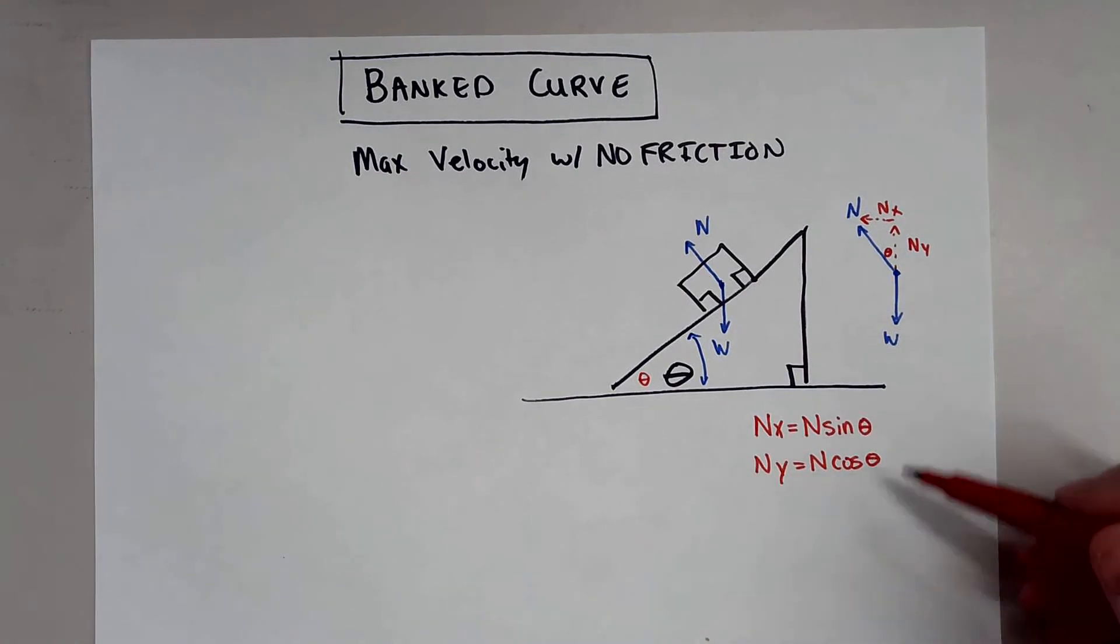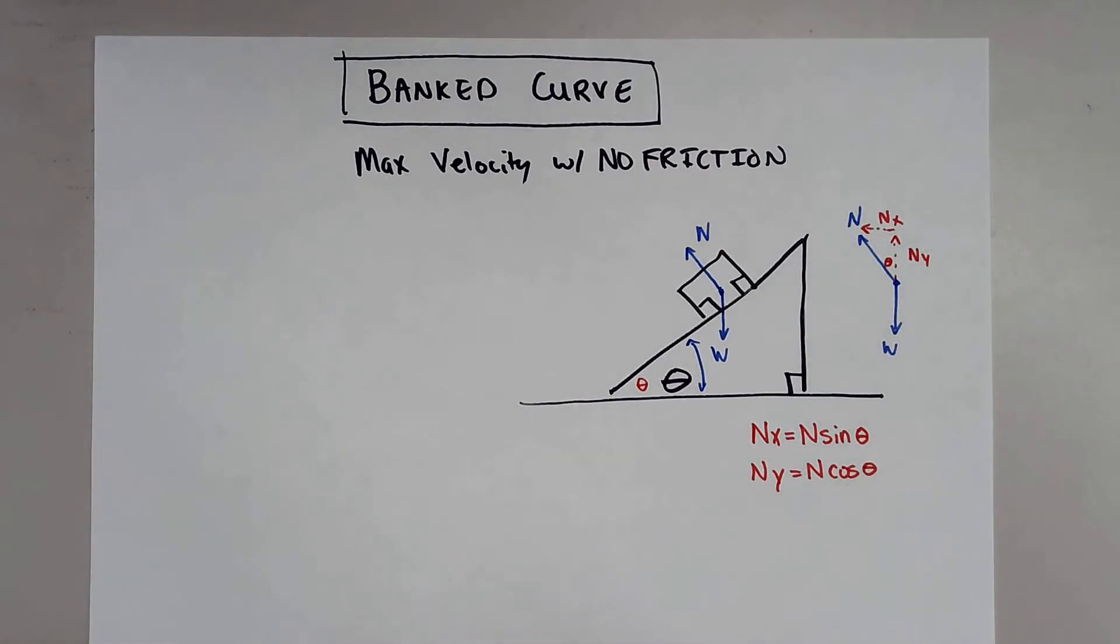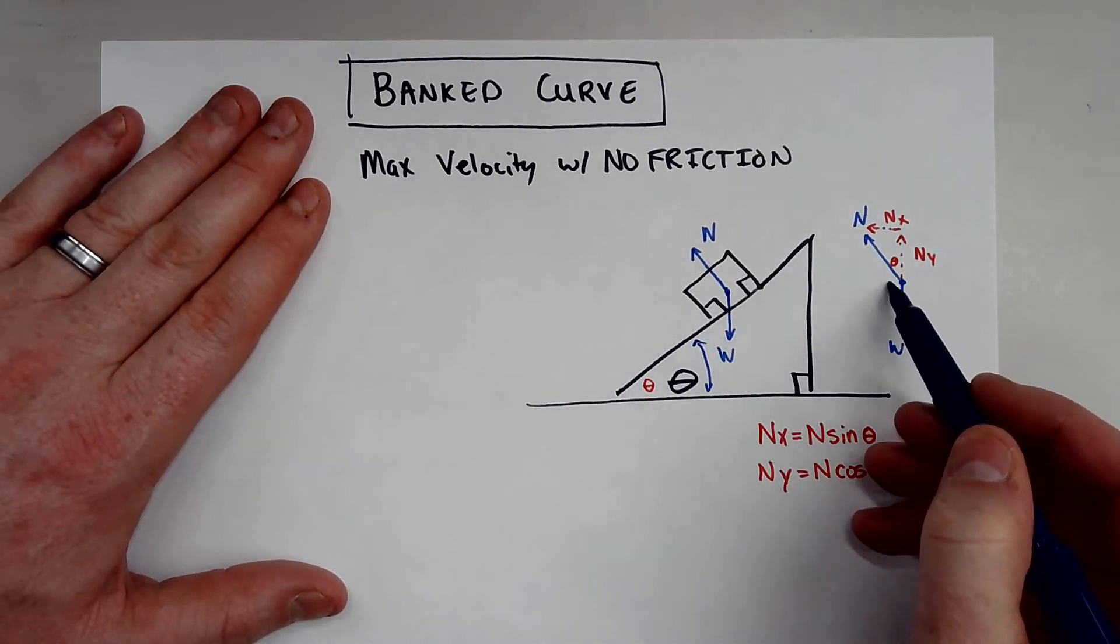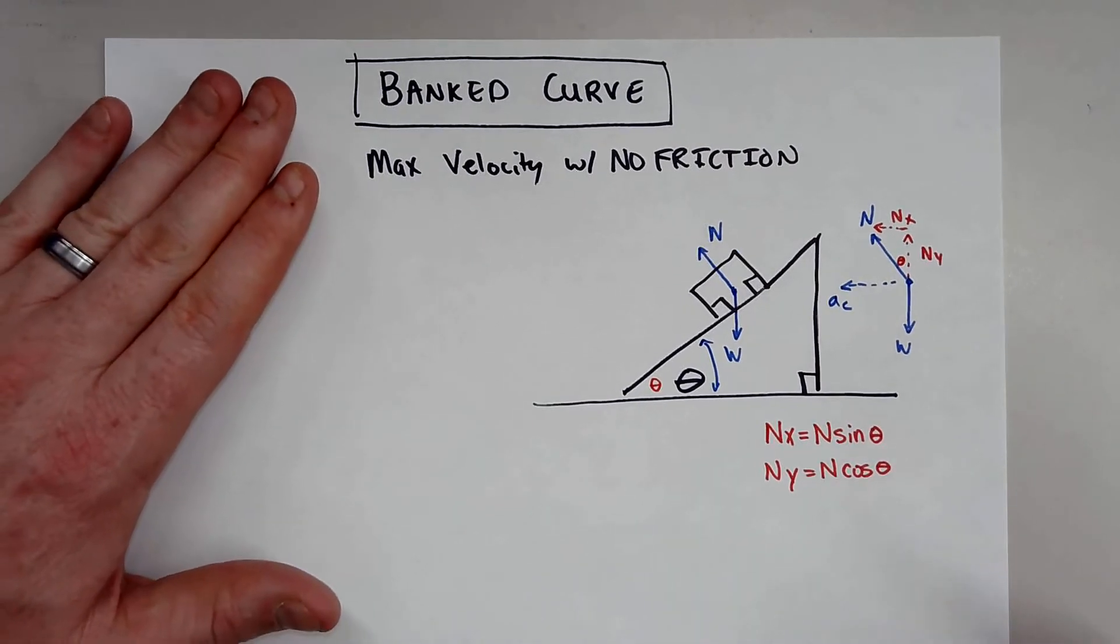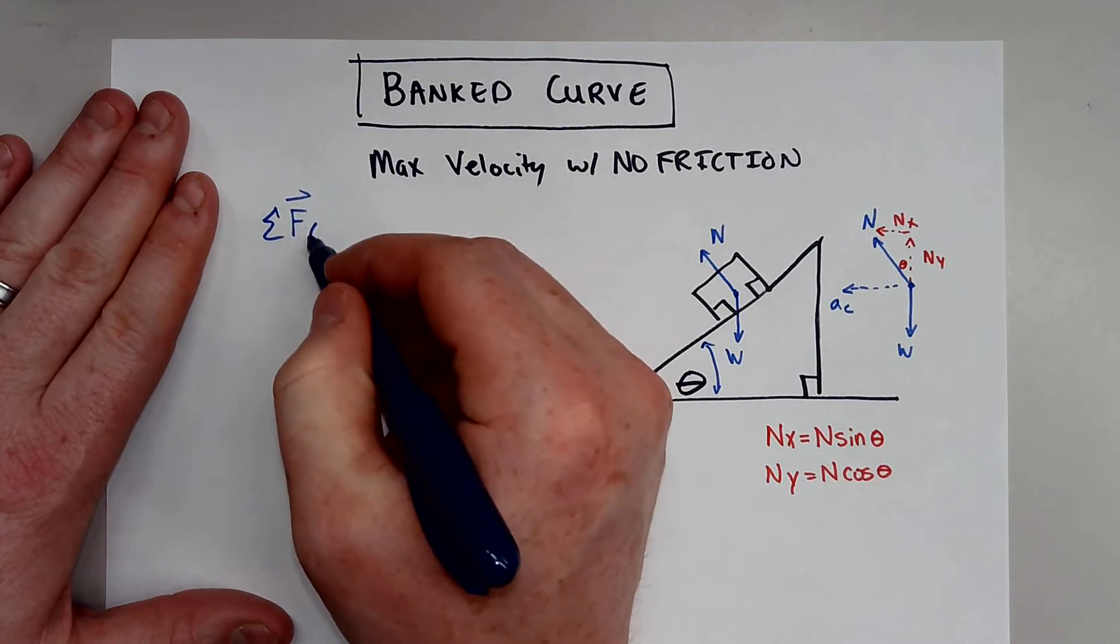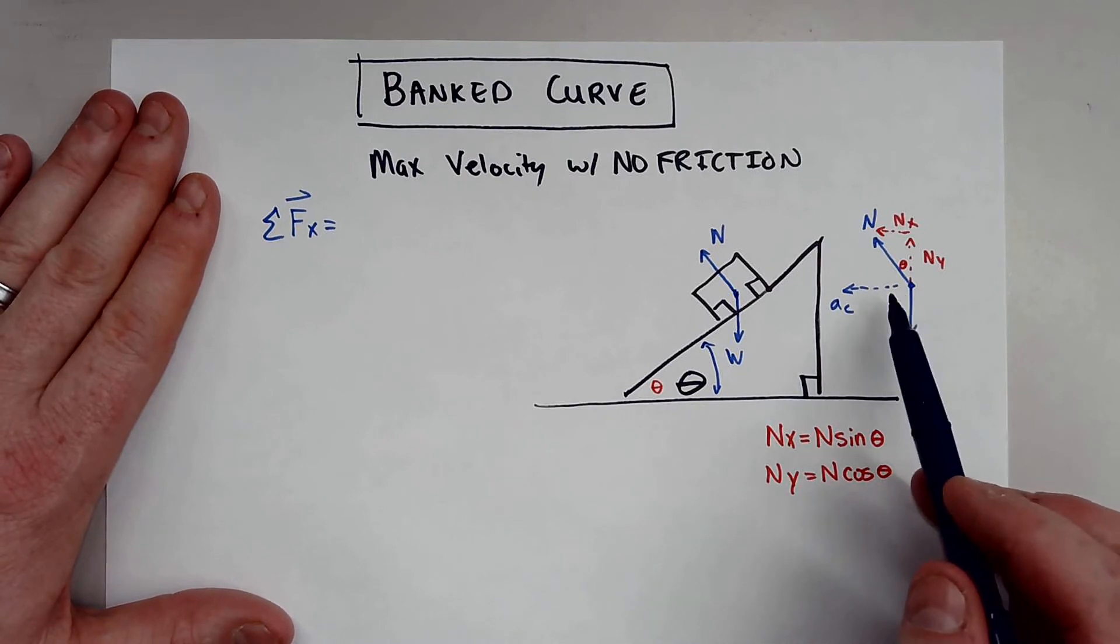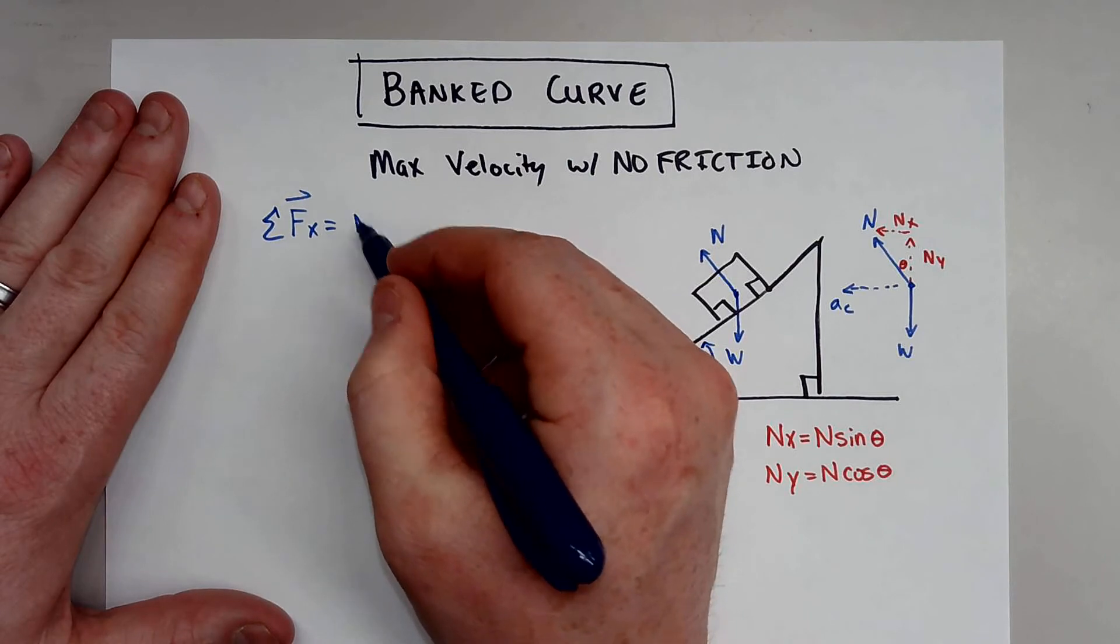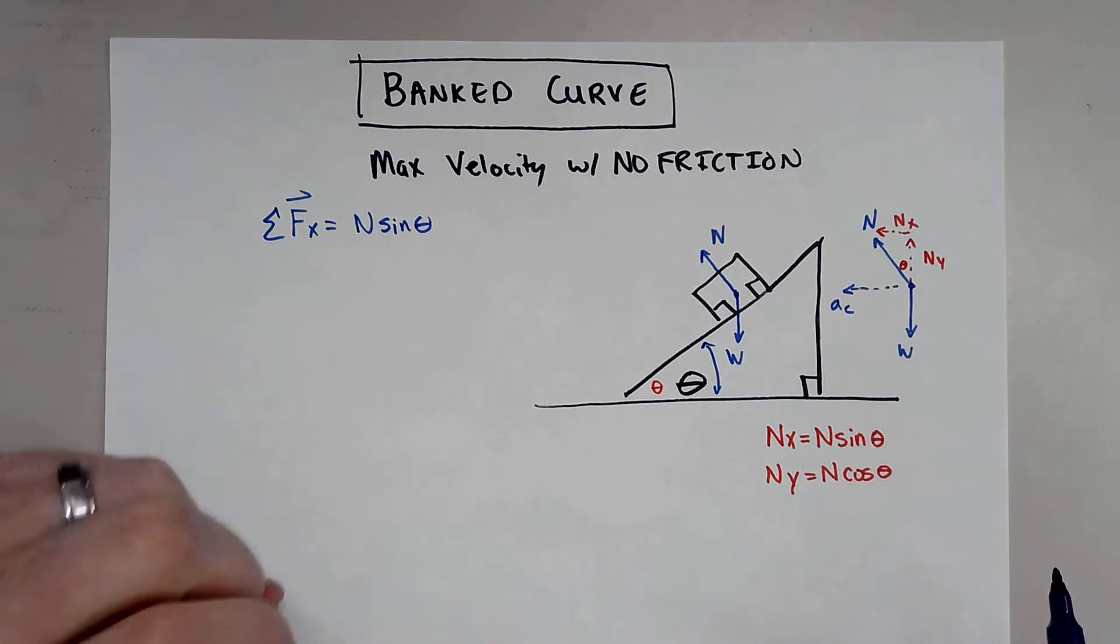Now if I have these, I'm pretty much good to go because the first thing we need to do is kind of split this up in x and y. Now I know there is, for example, going around this corner, there is a component of acceleration towards the center. And in the x direction, let's go ahead and sum all these up. The summation of all my forces in the x direction, for example, the only thing I really have here is this n sine of theta and that is how much those forces are going in the x direction.